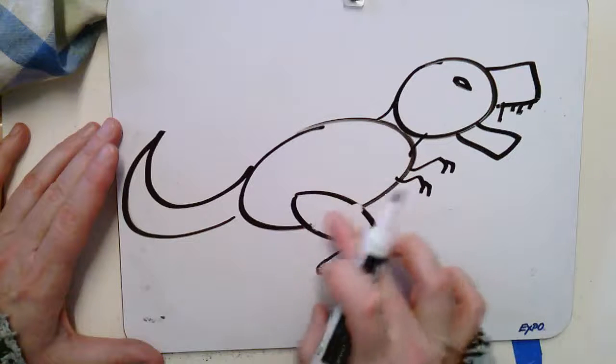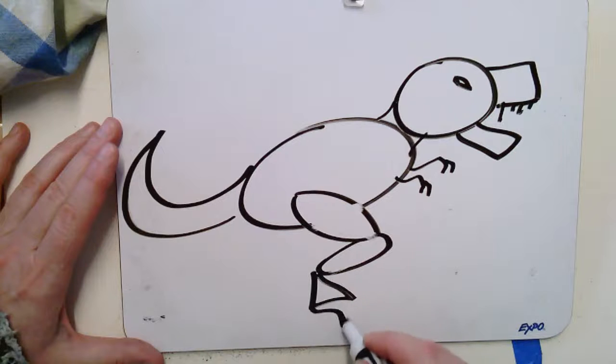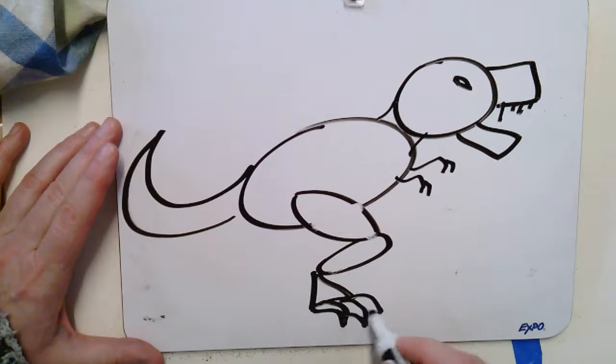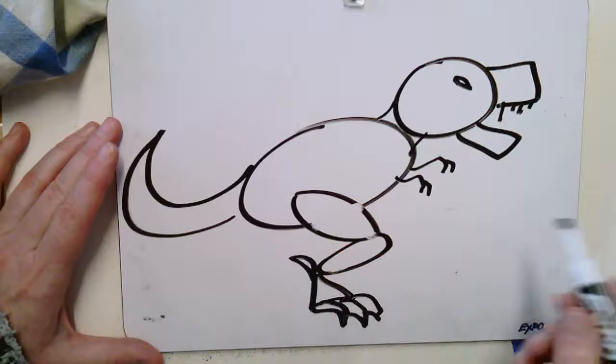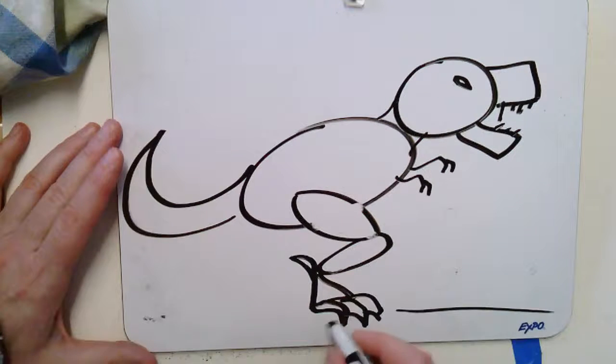See how they go back and forth? One goes this way, one goes this way. Triangle for the foot. Claws. Curved claws. Boom. Back claw, more fierce. Then you can draw the ground down here.